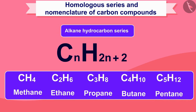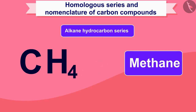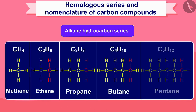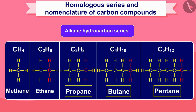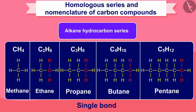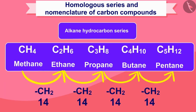For example, in the first compound of the series, methane, n will be 1. If we write 1 instead of n in the formula, we get the molecular formula of methane: CH4. All carbon compounds in this category belong to single bonds, so '-ane' is added at the end of the name, such as methane, ethane, etc. As mass increases in the homologous series, the mass of the molecule will increase.